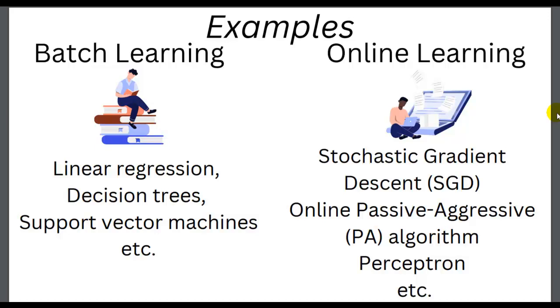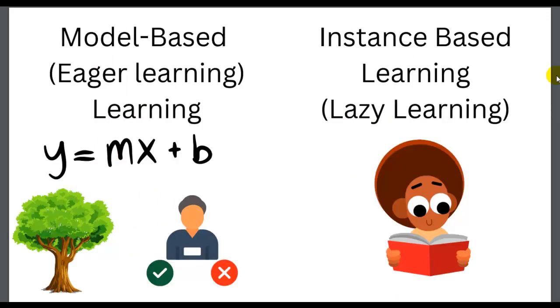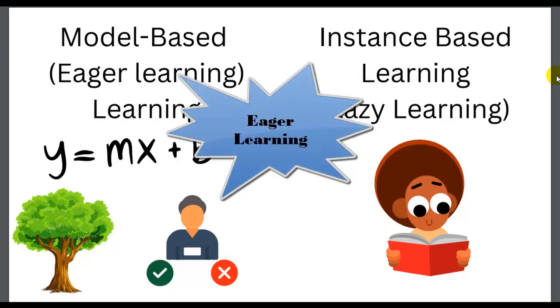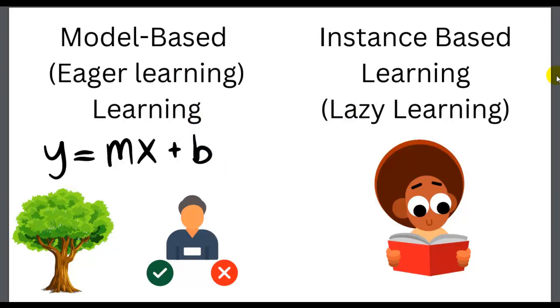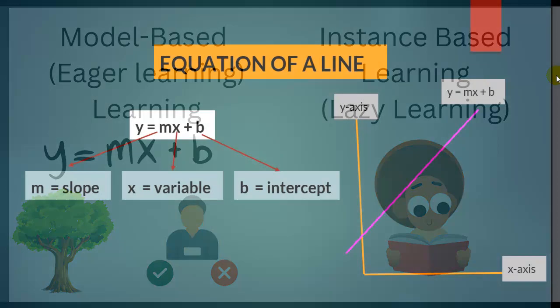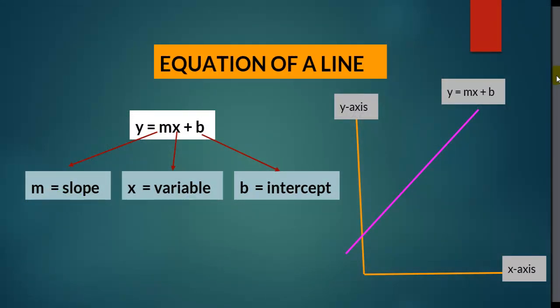Now let's discuss model-based learning and instance-based learning. Model-based learning is also called eager learning. Model-based learning tries to construct a generalized input-independent target function, that you can see over here: y = mx + b in case of linear regression during the model training phase.